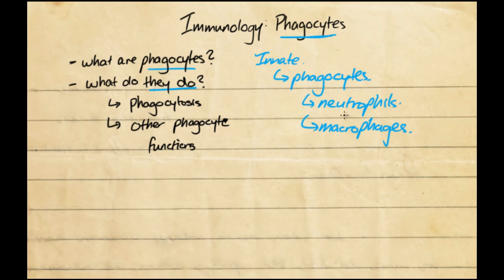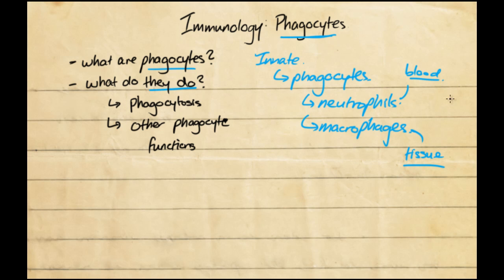Neutrophils and macrophages are immune cells in your body. Neutrophils are found in the blood, and macrophages are found in the tissues. There are various names for different types of macrophages in different tissues, but they reside in the tissue whereas the neutrophils reside in the blood.